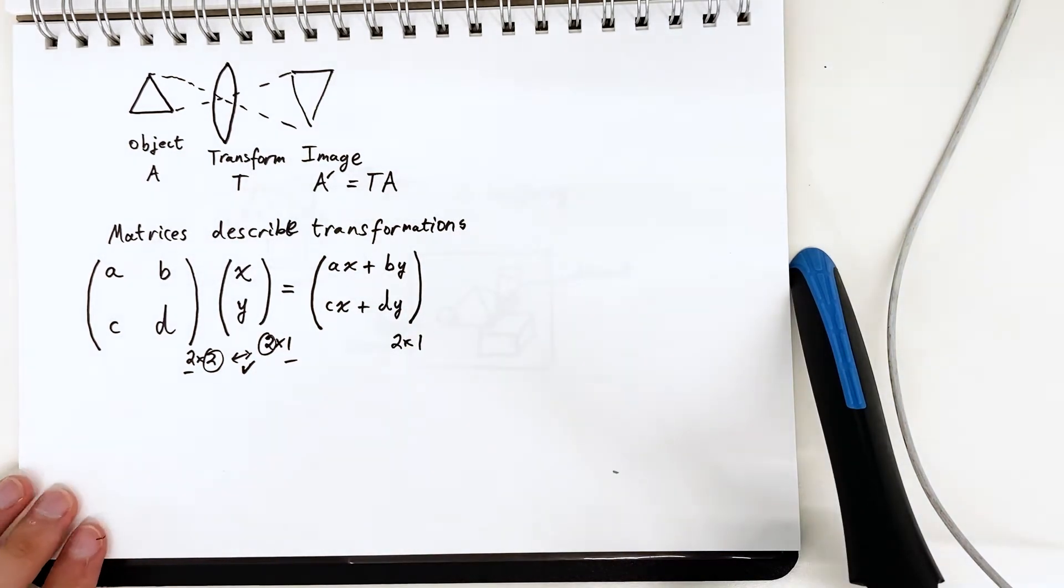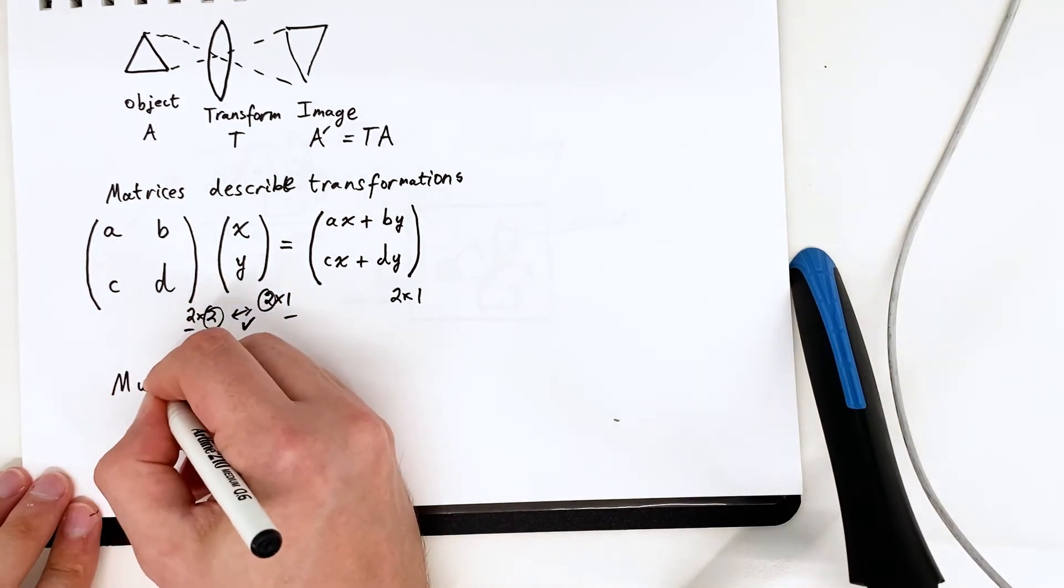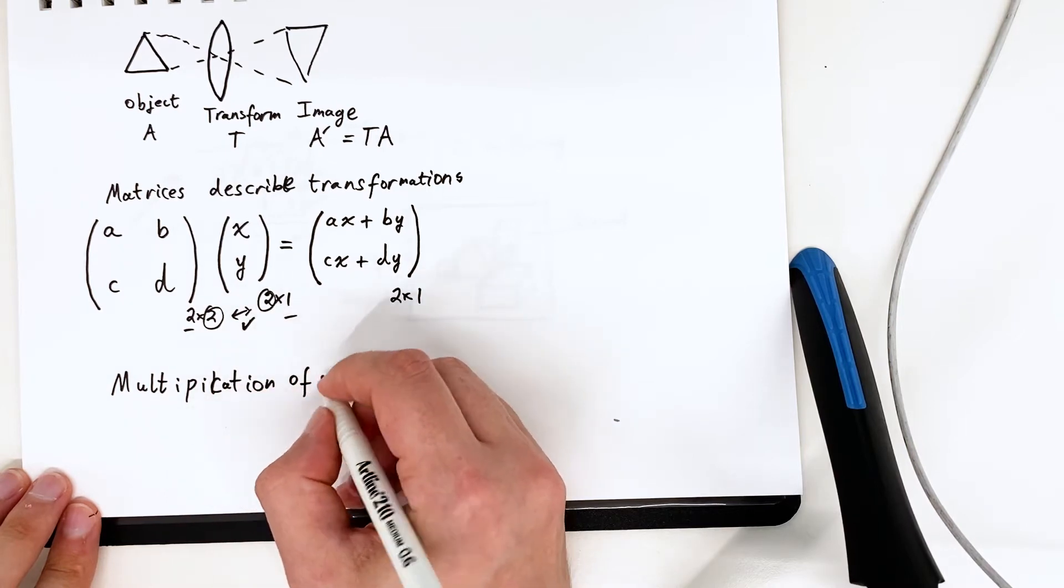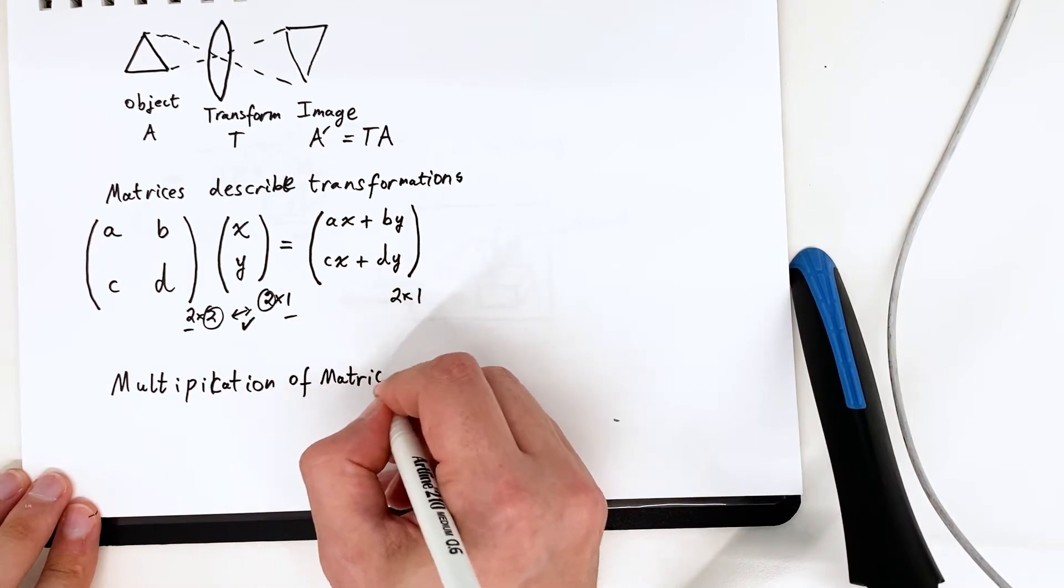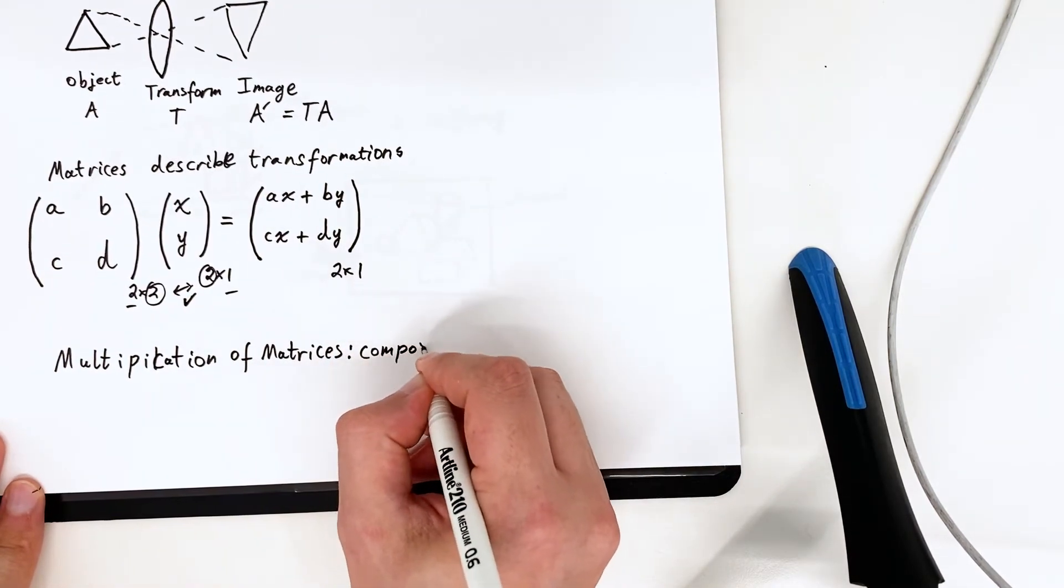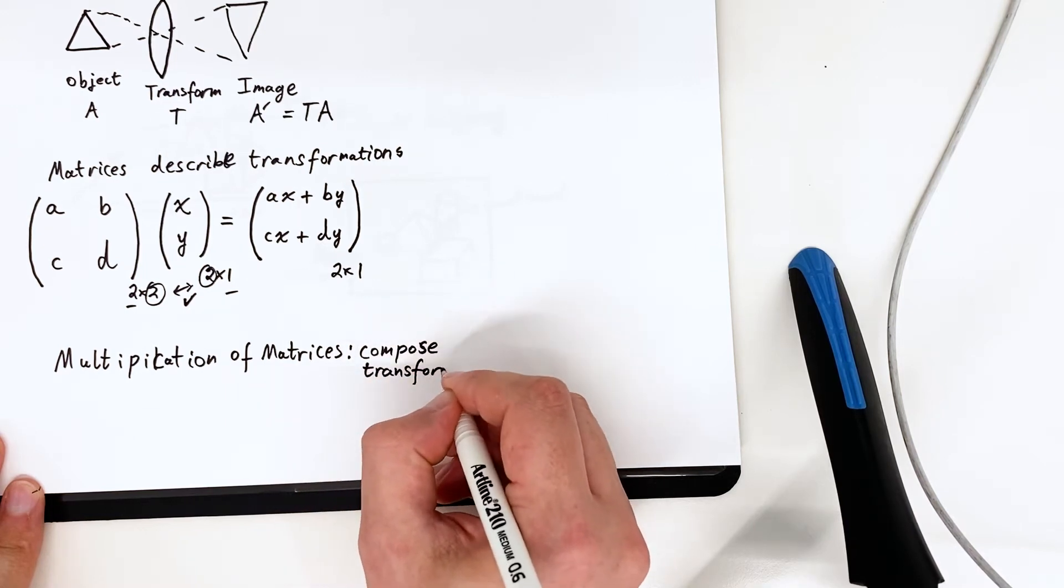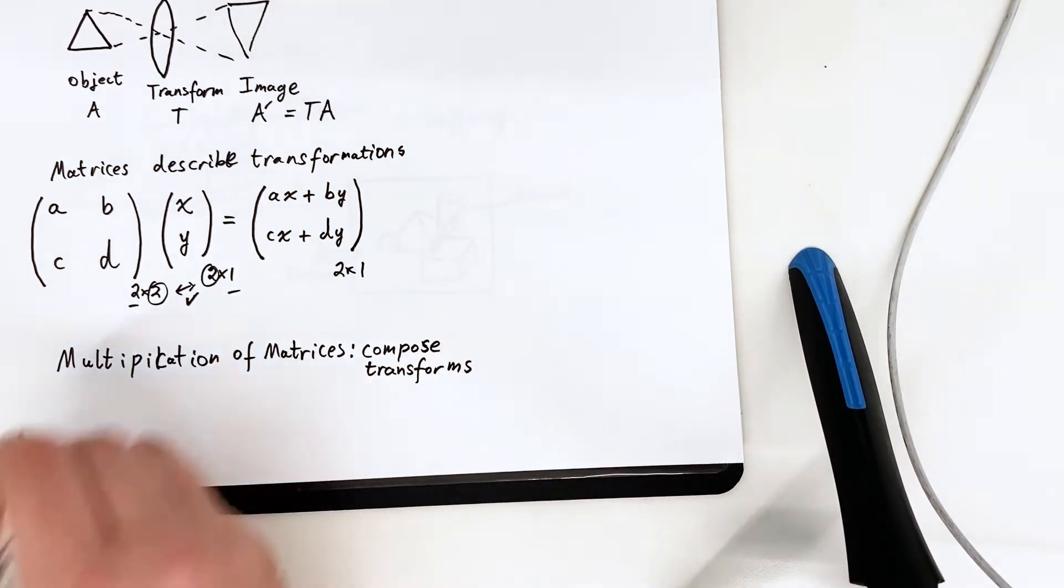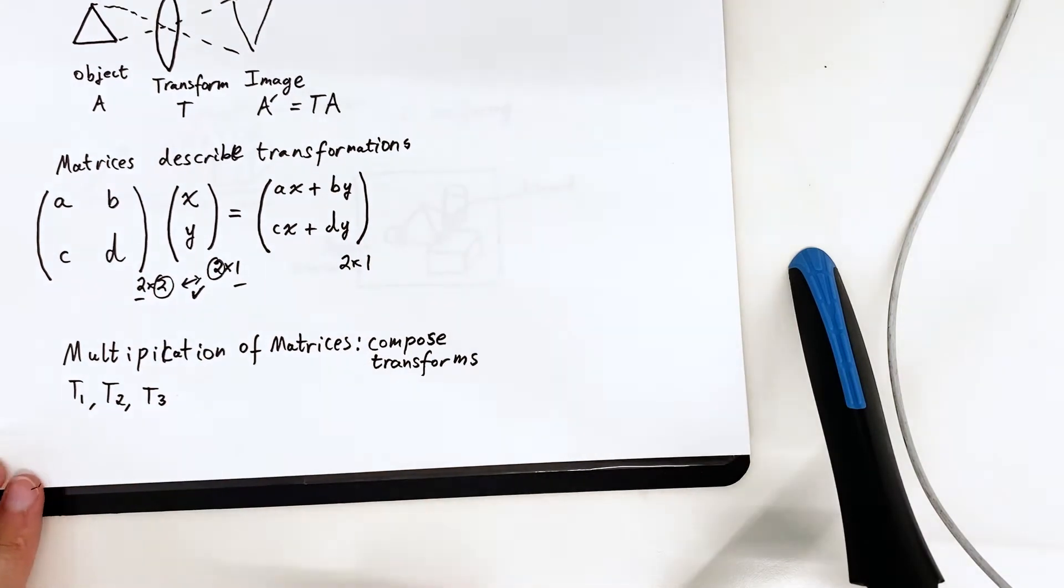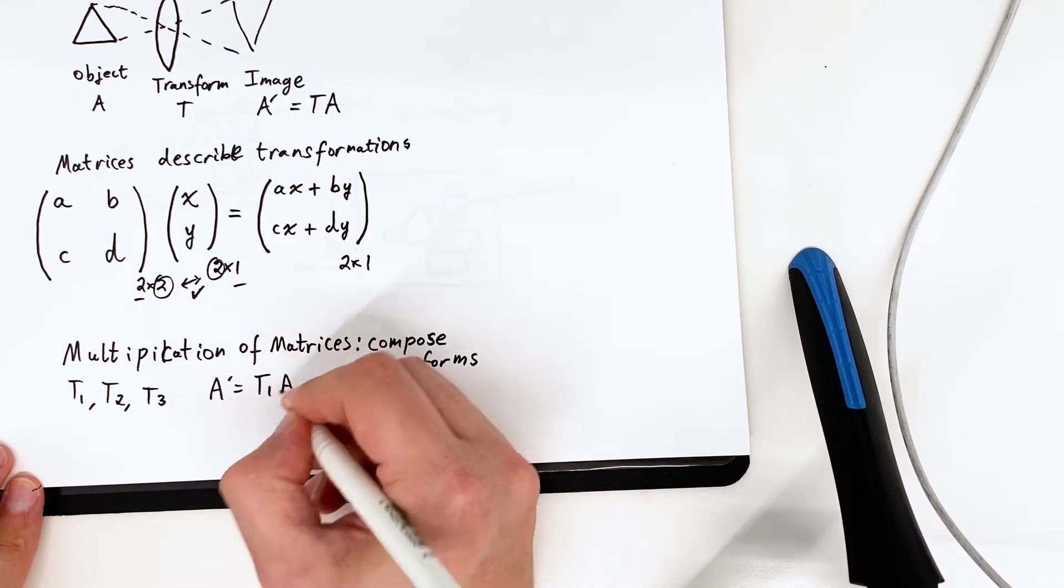What if we want to multiply lots of transformations, do lots of things? Well in order to compose transformations we multiply what's called a stack of matrices. Let's say we want to do transformations 1, 2 and 3. First we take the point a, hit it with the transformation t1 and that produces a dash. Then to get a double dash, we get the image a dash and hit it with t2, but that's also equivalent to going t2 times t1 times a.